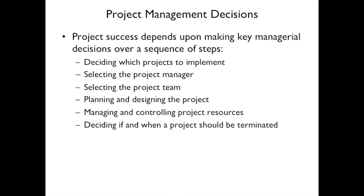Project management decisions happen over a sequence of steps: first, decide what projects to implement; then select a project manager; then select the project team; then plan and design the project; manage and control resources; and decide if and when the project should be terminated. Ideally it's terminated when done, but sometimes you find it's harder than expected and it needs to be terminated early.